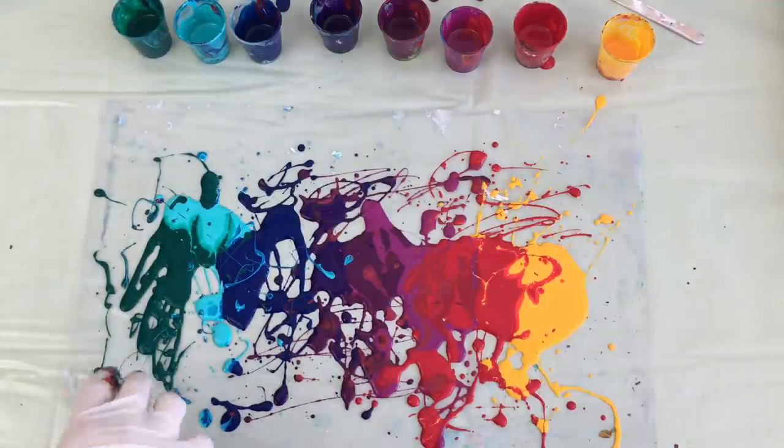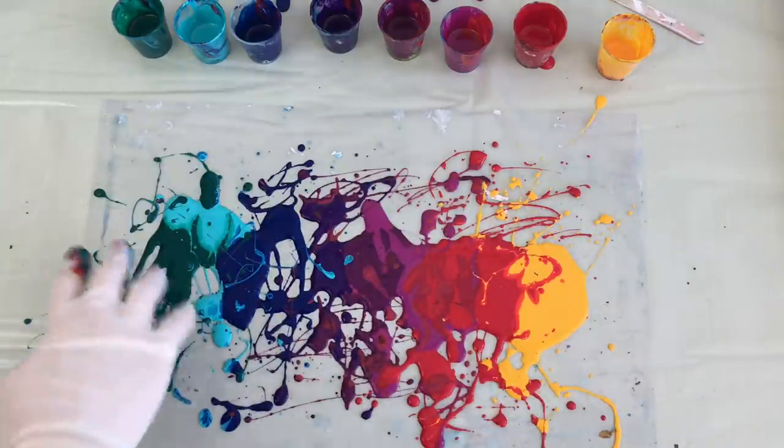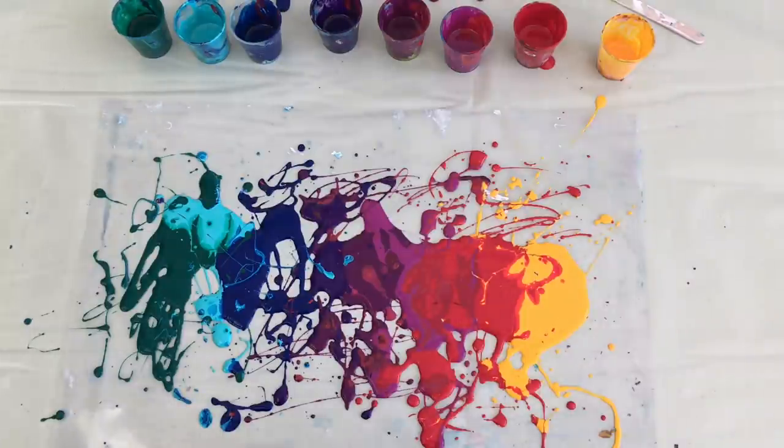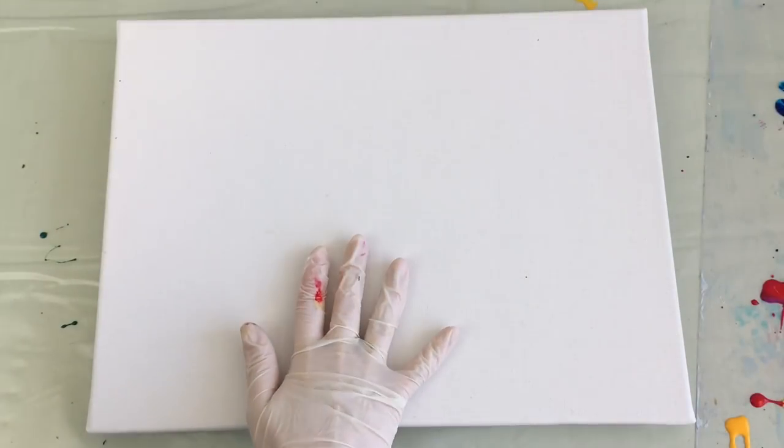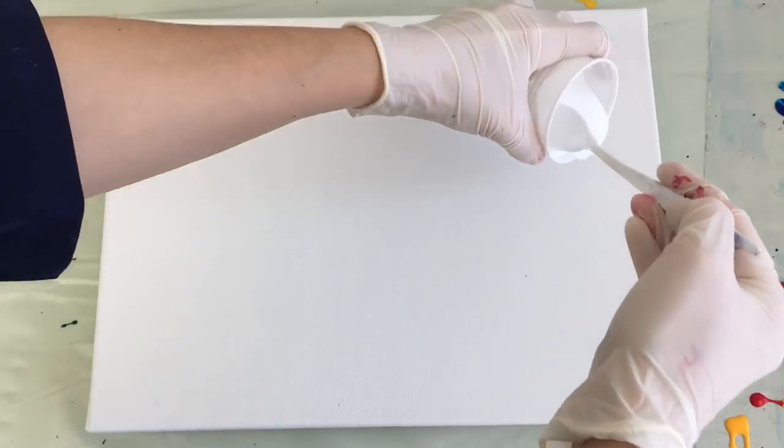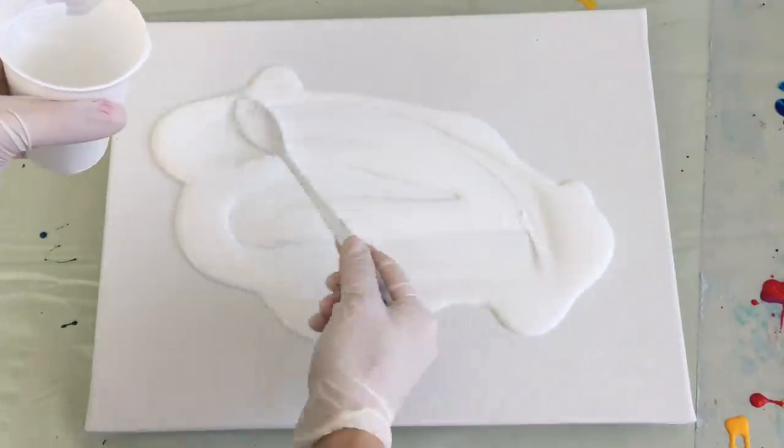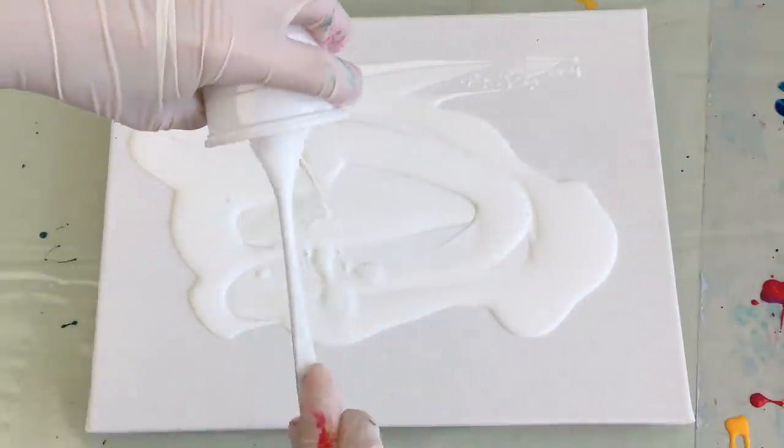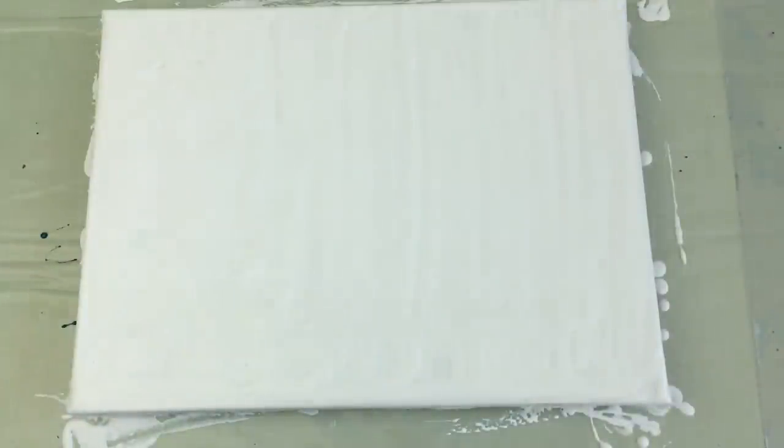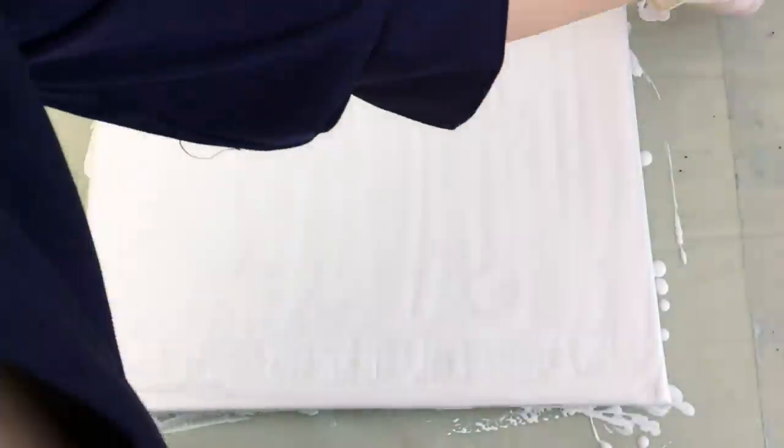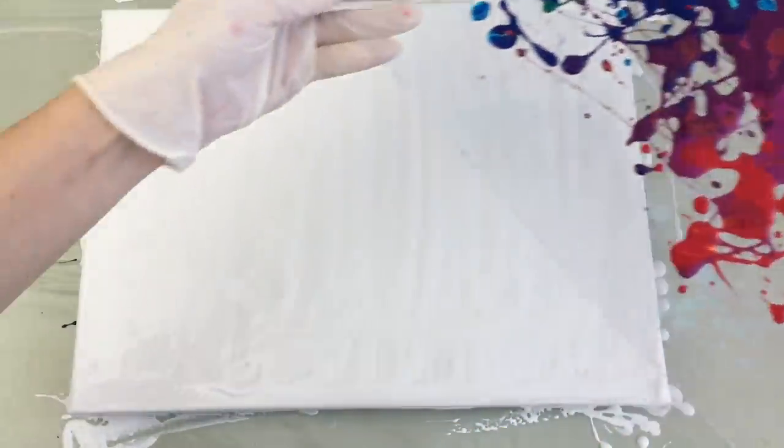I'm going to move this aside for now. So I've got my canvas here, 20 times 30 centimeters, and I'm going to pour my white all over my canvas. Spread it everywhere. Cool.